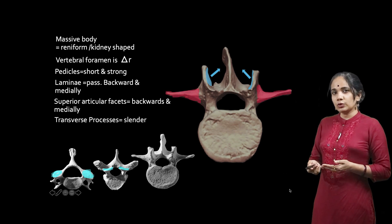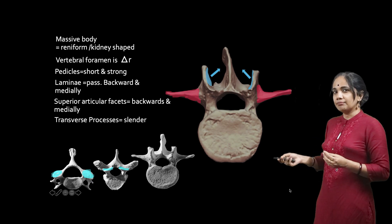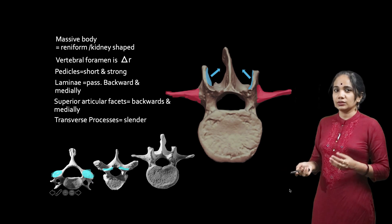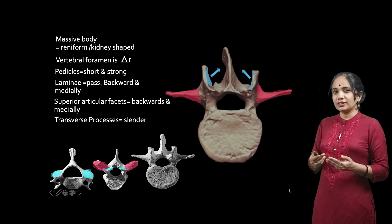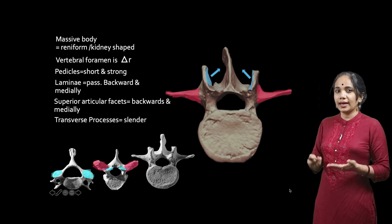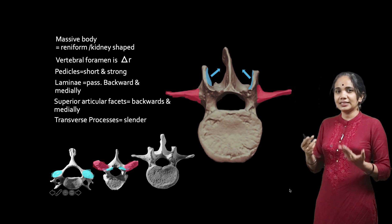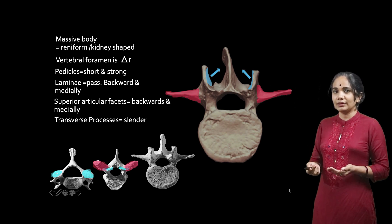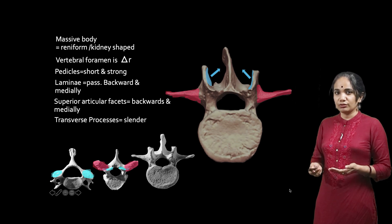The lumbar transverse processes are also really slender and thin compared with the thoracic transverse processes, which are really thick. These are the key differences between the lumbar and the thoracic and cervical vertebrae. Now let us try to rotate the vertebra a little bit and see it from the lateral point of view.